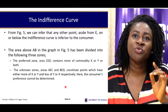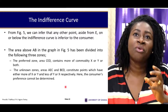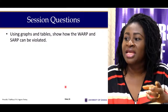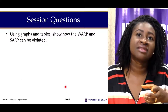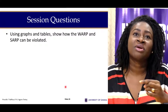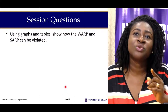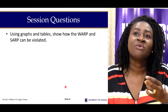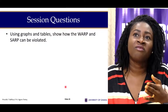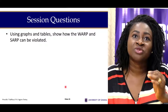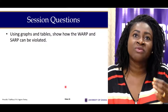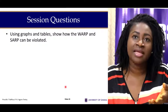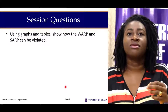I would urge you to read the chapter carefully and go through the curves derived in this chapter. The practice question is: using graphs and tables, show how the weak axiom of revealed preference and the strong axiom of revealed preference can be violated. All the best.